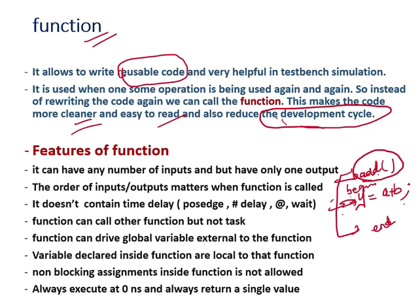What are the features of a function? A function can have any number of inputs, but it contains only one output. For tasks, you can have any number of inputs and any number of outputs. But for a function: any number of inputs, but only one output. The order of inputs and outputs matters when a function is called — this is very important.